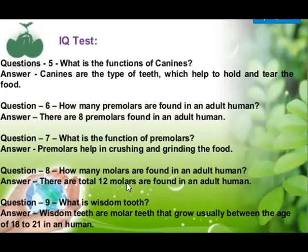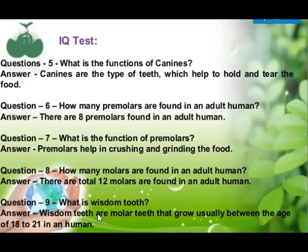How many molars are found in an adult human? There are a total of 12 molars present in an adult human. What are wisdom teeth? Wisdom teeth are molar teeth that grow usually between the age of 18 to 21. Because they grow during this age group, they are known as wisdom teeth.